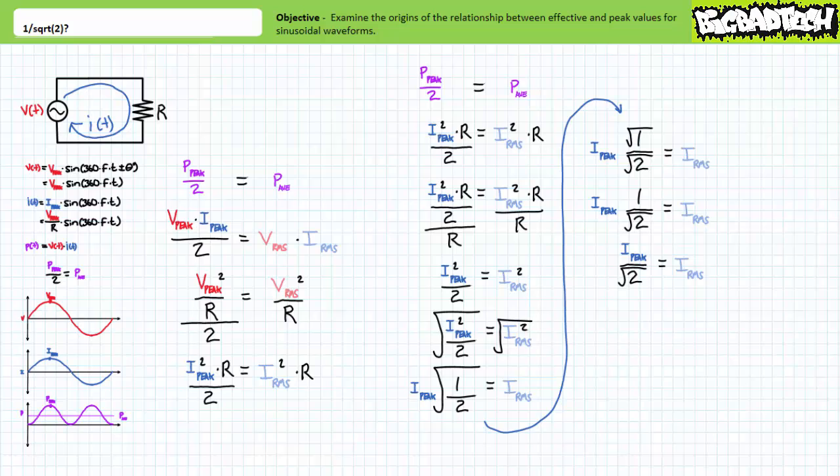The effective or RMS value of a sinusoidal waveform is 0.707 of its peak value and the peak value is roughly 1.414 times the effective or RMS value. Do not mess this relationship up. Importantly, since effective values convey far more usable information than peak values...